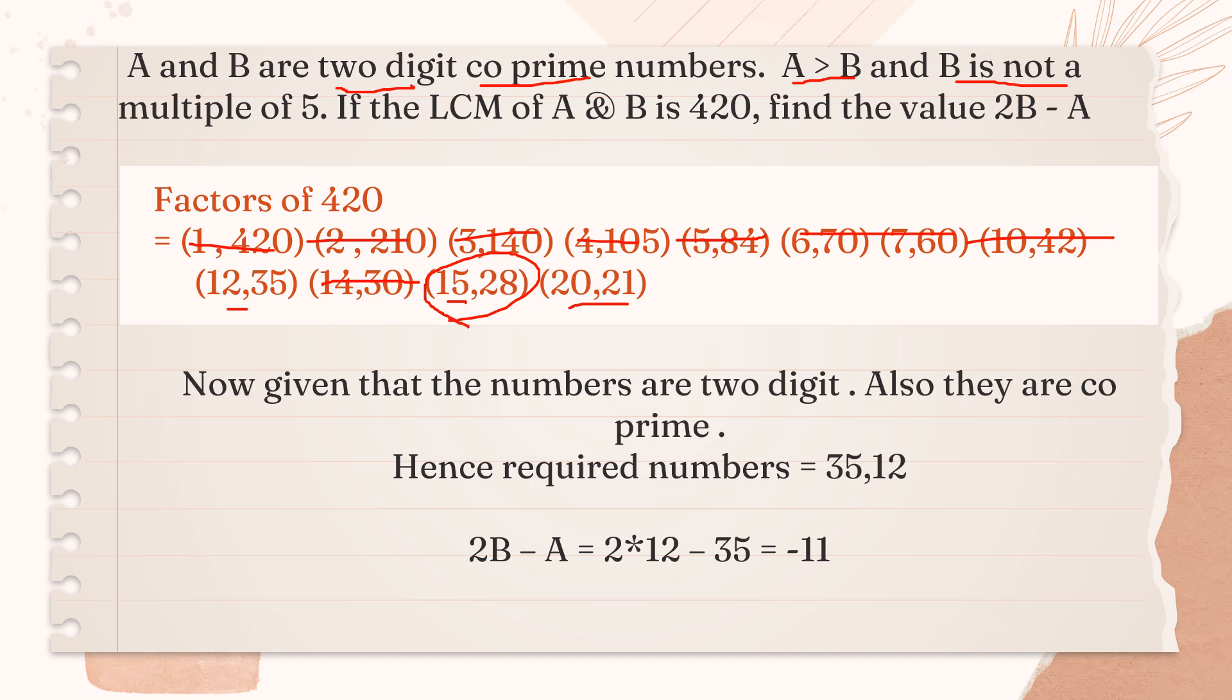As you can see in this set, 15 is the smaller number and is a multiple of 5. But the condition states the smaller number is not a multiple of 5. So, this goes out of question. Now, in this set, 20 and 21, 20 is the smaller number and is again a multiple of 5. So, we cut this option also.